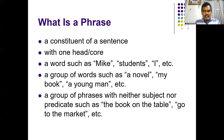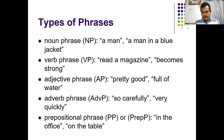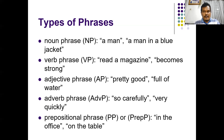Remember that a phrase must have a core. Based on the word class that serves as the core, phrases are divided into five types: noun phrase, verb phrase, adjective phrase, adverb phrase, and prepositional phrase. The names of the phrases are derived from the word class of the core.